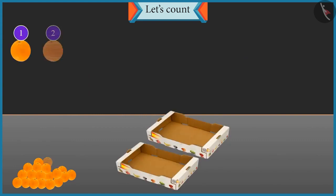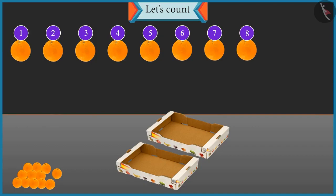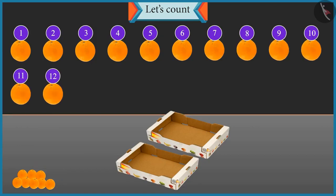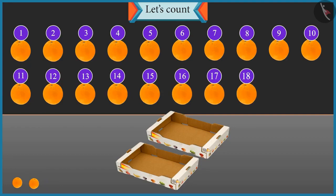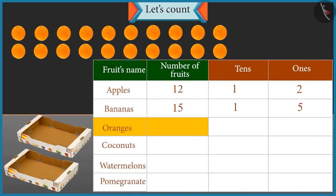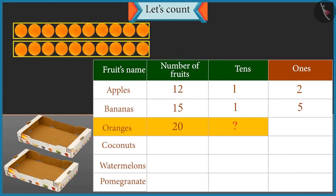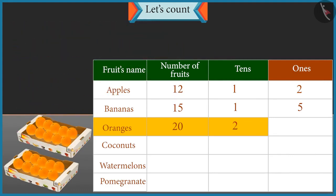Now let's count these oranges and place them in the box. One, two, three, four, five, six, seven, eight, nine, ten, eleven, twelve, thirteen, fourteen, fifteen, sixteen, seventeen, eighteen, nineteen and twenty. There are twenty oranges. Well done. Now tell me, how many tens are there in twenty? With twenty oranges, two groups of ten oranges will be formed, so there are two tens. And how many ones are there in twenty? There are no oranges left, so the number of ones is zero. Well done, Chotu.